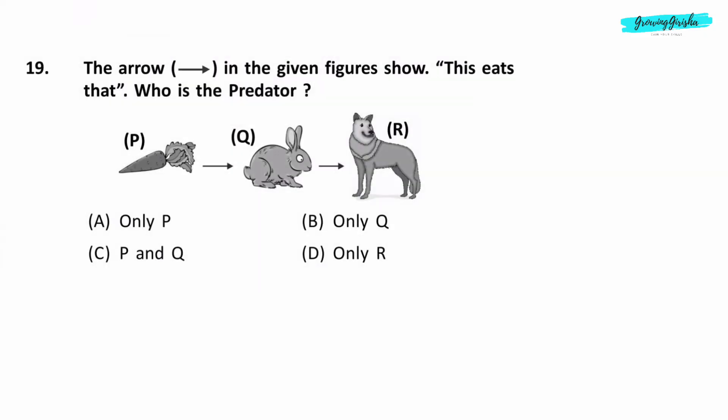Question 19. The arrow in the given figures show this eats that. Who is the predator? Option D. Only R.